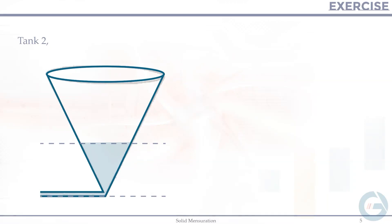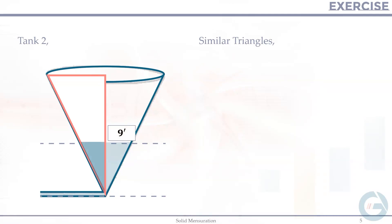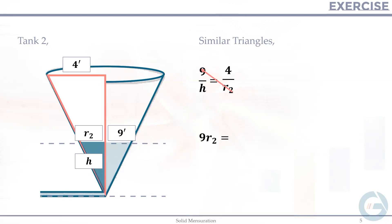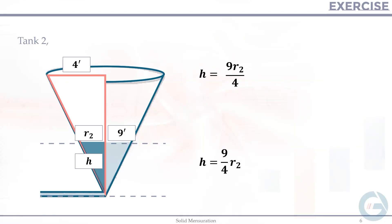Next is the second tank, using the same concept of similar triangles. This tank has a height of 9 feet. The final water level is also H — the same height as tank 1, by the communicating vessels principle. The full tank radius is 4 feet, and the final water radius is R₂. Cross multiplying gives 9R₂ = 4H, so H = (9/4)R₂. Take note of this second equation.